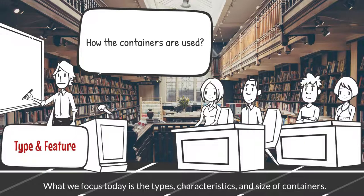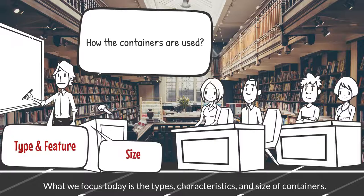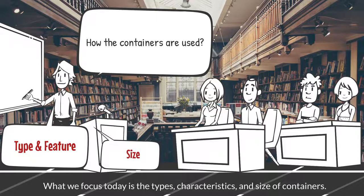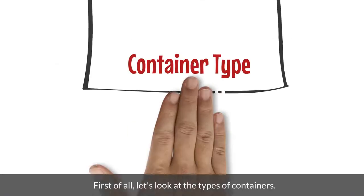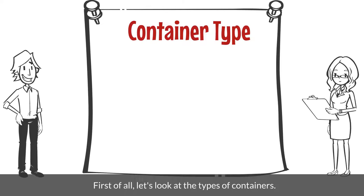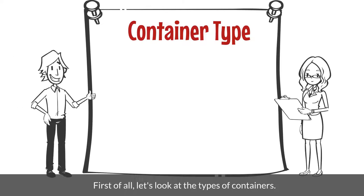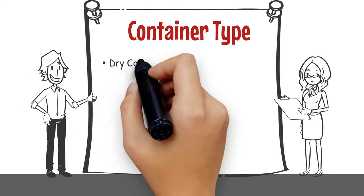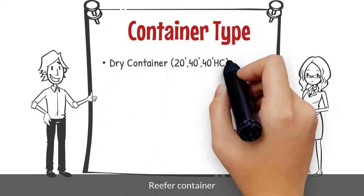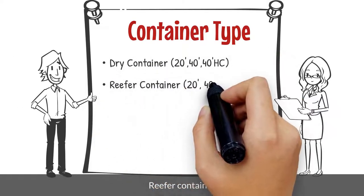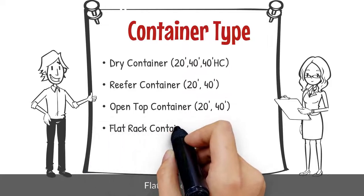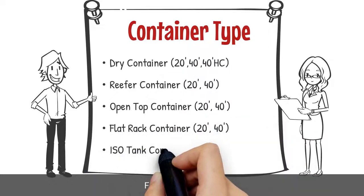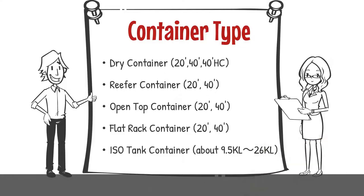What we focus on today is the types, characteristics, and size of containers. First of all, let's look at the types of containers: dry container, reefer container, open top container, flat rack container, and ISO tank container.